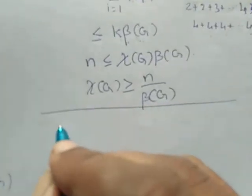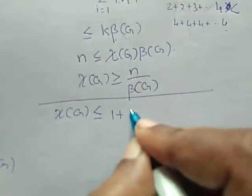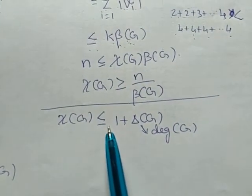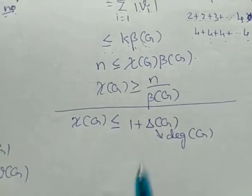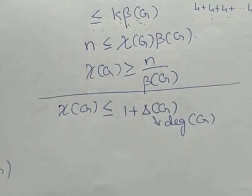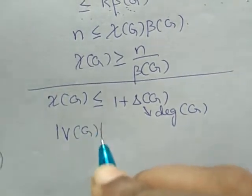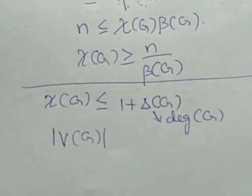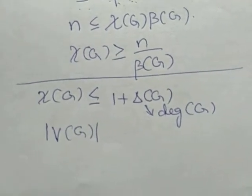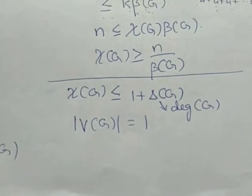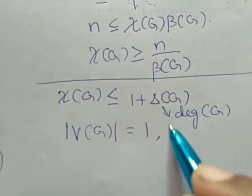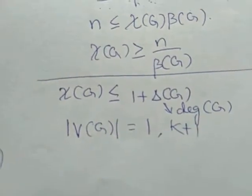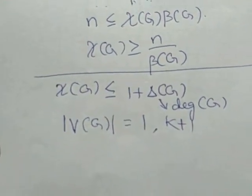We are also going to prove that χ(G) ≤ 1 + Δ(G), where Δ(G) is the maximum degree of G. We will prove this using induction on the number of vertices. We prove the statement is true for graphs with 1 and 2 vertices, assume it is true for k vertices, and then prove it is true for k+1 vertices. If |V(G)| = 1, the graph has only one vertex with degree 0, colored with one color.